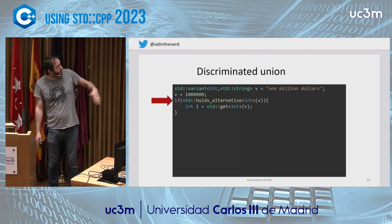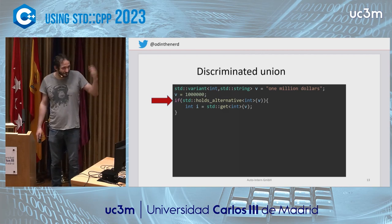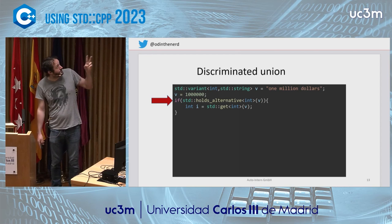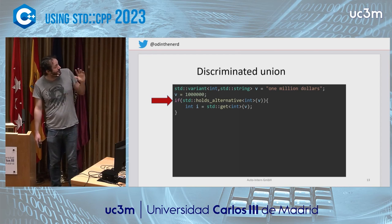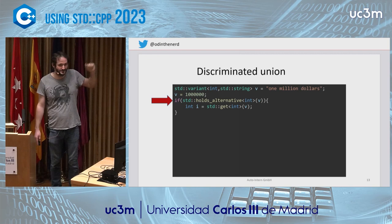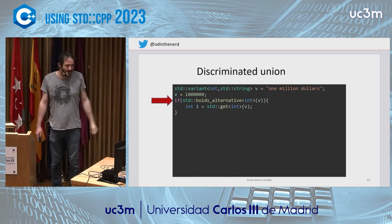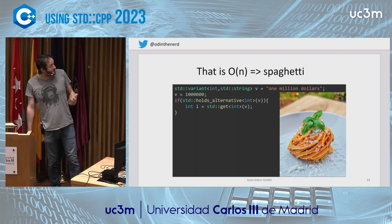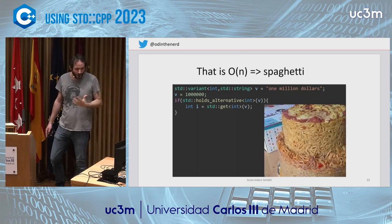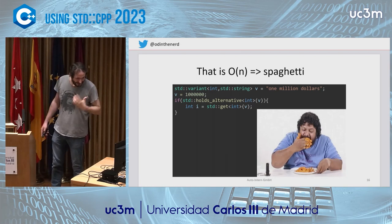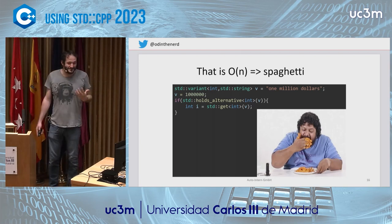Going through all the kinds of things a variant could be, testing and reacting accordingly — it's still spaghetti code. With two types it's maybe not spaghetti code yet, but if we had a hundred types we'd be testing one after another after another. Not the yummy kind of spaghetti — the bloated, disturbing kind. So what can we do about this?